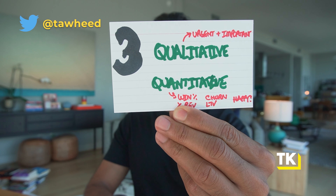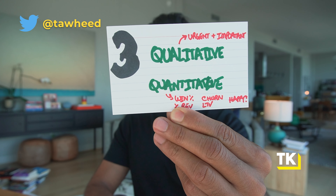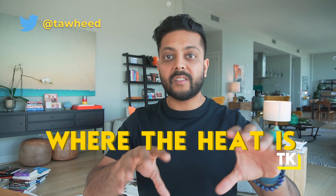As you're thinking about different ICPs and building an ideal customer profile, think about it from a qualitative basis — is it urgent and important? — and also from a quantitative basis — what's the win rate, what's the churn rate, what percentage of revenue does this represent? That can help you figure out where the heat is. This is a phrase I use all the time when working with founders. When you lay out the pieces like this, you start to see where the heat is, you double down, you understand the patterns — and that always follows with growth.